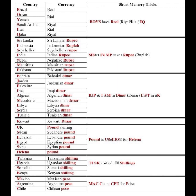Next is the Shilling column. The mnemonic is TUSK — Tanzania, Uganda, Somalia, Kenya. All four of these African countries use Shillings: Tanzanian Shilling, Ugandan Shilling, Somali Shilling, and Kenyan Shilling.